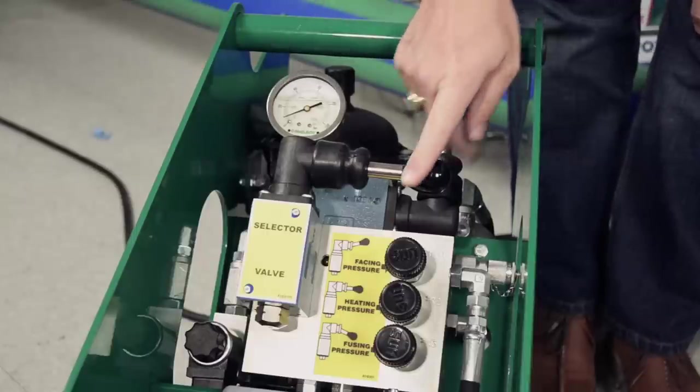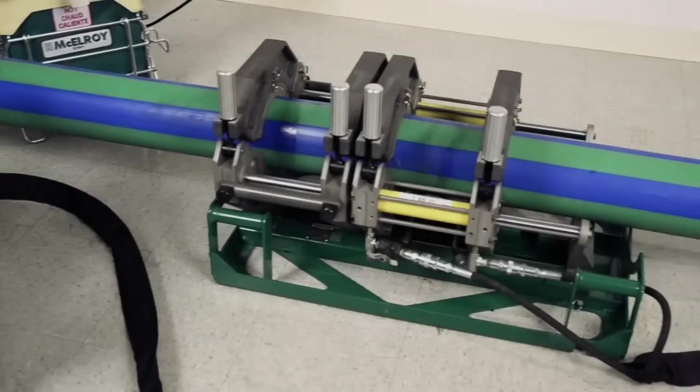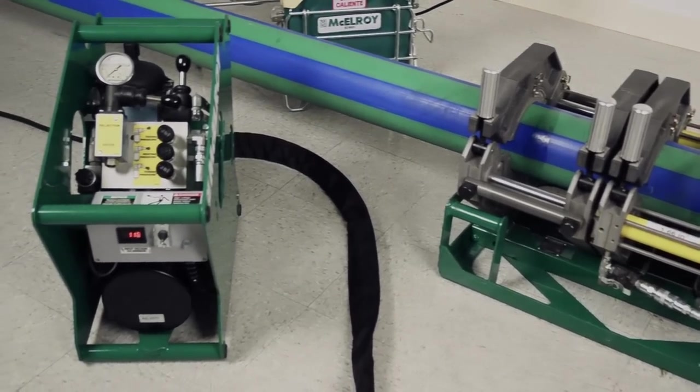Next, shift the pressure selector valve to fusion. Refer to the welding pressures chart in the Aquatherm manual. You will need to know the fusion machine you are using and the kind of cylinders that it has. High force, medium force, or low force cylinders.